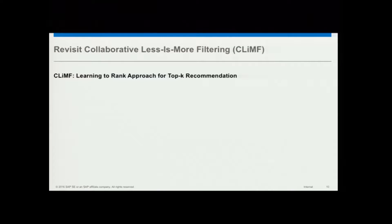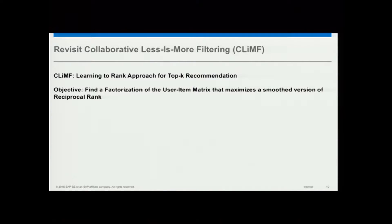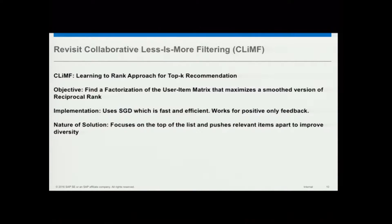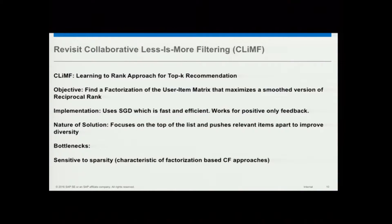A quick revisit of CLIMF: it is a learning-to-rank approach for top-k recommendation. The objective is to find a factorization of the user-item matrix that maximizes a smooth version of the reciprocal rank. We are going to use exactly this objective for our formulation also. It uses SGD, which is fast and efficient, and it works for positive-only feedback. The solution focuses on the top of the list because it's a reciprocal rank, and it pushes relevant items apart to improve diversity. The only problem is sensitivity to sparsity.